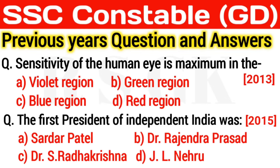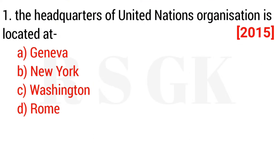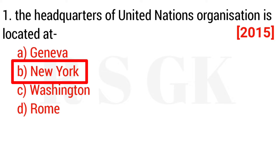Hello friends, welcome back to my YouTube channel RSGK. Today in this video we are going to discuss SSC GD previous year question and answers. Question 1: The headquarter of the United Nations organization is located at — option A Geneva, option B New York, option C Washington, option D Rome. The correct answer is option B, New York.